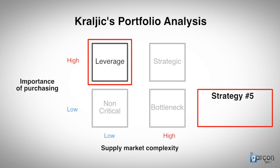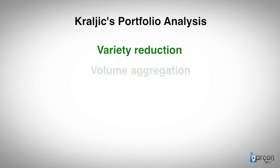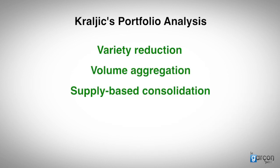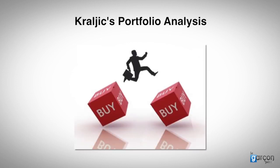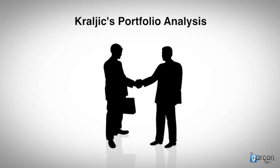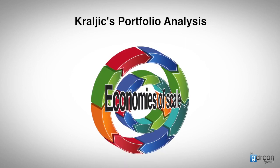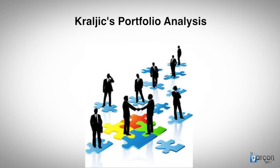Strategy five is the go-to-market strategy of online auctions, RFPs, and bid and negotiate. Variety reduction, volume aggregation, and supply-base consolidation are the tactics that help harvest value. Interestingly, the pure application of Kralich's ideas would suggest short-term spot buying rather than longer-term contracts. But most procurement strategies seek to achieve economies of scale through entering into longer-term arrangements.